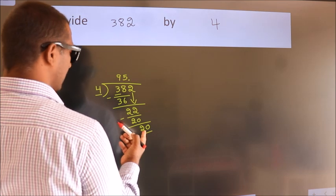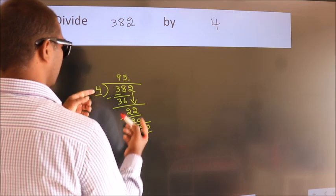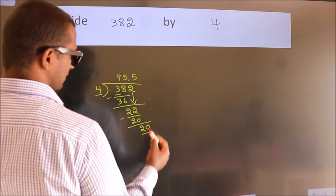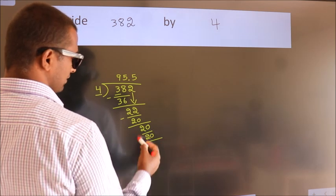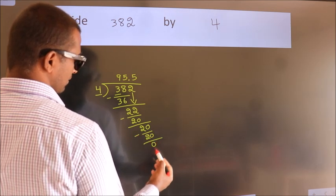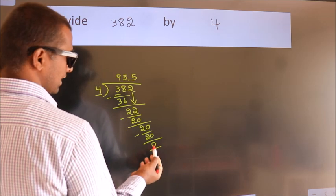When do we get 20 in the 4 table? 4 fives is 20. Now, we subtract. We get 0. We got remainder 0.